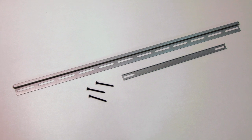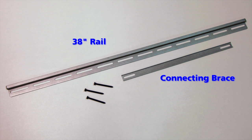Each cabinet comes with one 38 inch metal hanging rail, one connecting brace, and three wood screws.